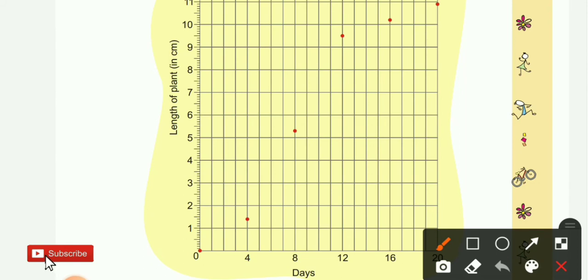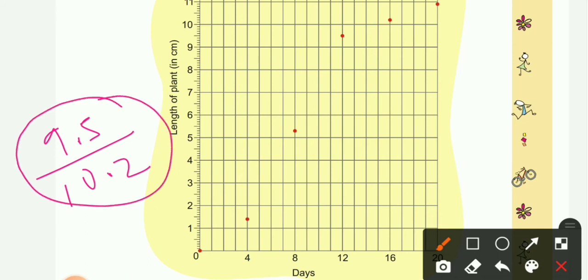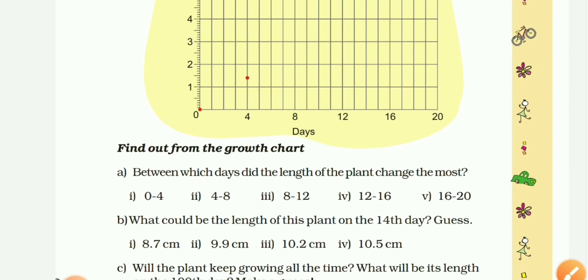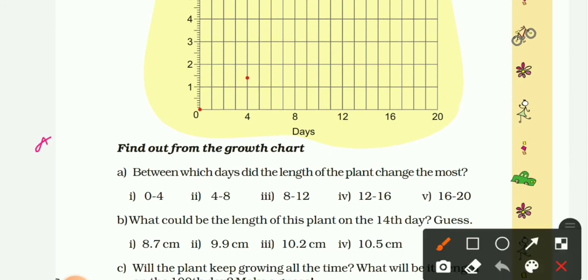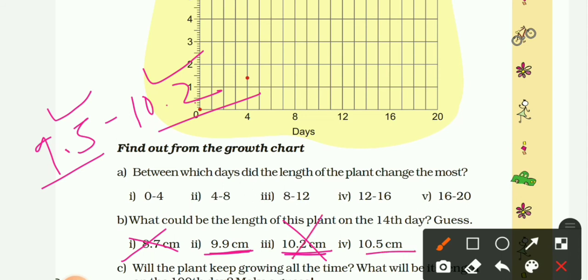It was 9.5 to 10.2, means the number should be between 9.5 to 10.2. Let's check. 8.7, it may be not because it is less than 9.5. 9.9, yes it is coming between 9.5 and 10.2. Next is 10.2, so it is exactly 10.2, we cannot take it. And 10.5 is bigger than 10.2, so it may be not. So yes, second will be our answer: 9.9 centimeter.